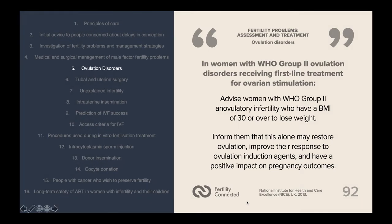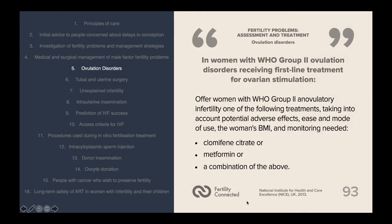For women with WHO group two ovulation disorders receiving first-line treatment for ovarian stimulation, those with a high BMI of over 30 should be advised to lose weight, as this alone may restore ovulation, improve their response to ovulation induction agents, and have a positive impact on pregnancy outcomes. Treatments to offer include clomiphene citrate, metformin, or a combination of both. For women taking clomiphene citrate, offer ultrasound monitoring during at least the first cycle to minimise the risk of multiple pregnancy, and do not continue treatment for longer than six cycles.